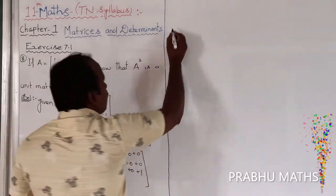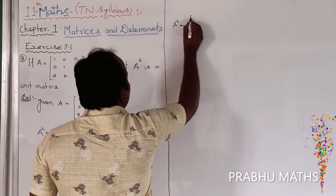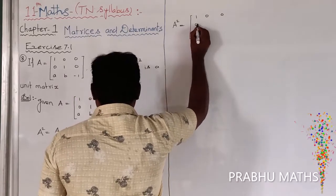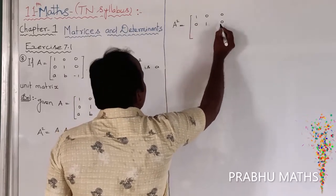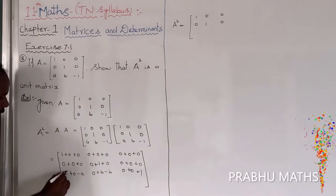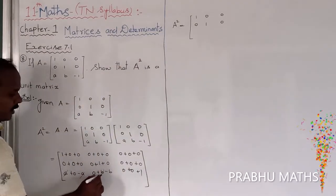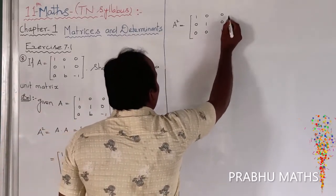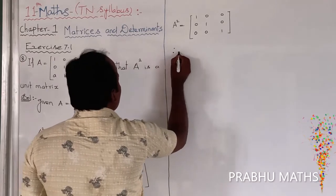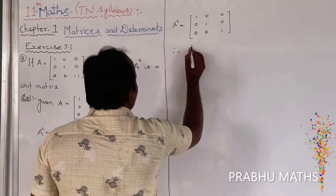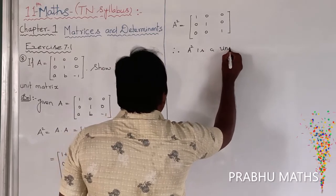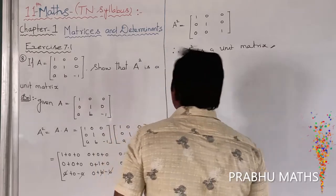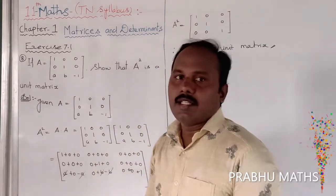We get the solution. So A squared is equal to the matrix: 1, 0, 0; 0, 1, 0; 0, 0, 1. The minus A plus A cancels, and plus B minus B cancels, giving zeros. Therefore, A squared is a unit matrix. Hence, the proof is complete.